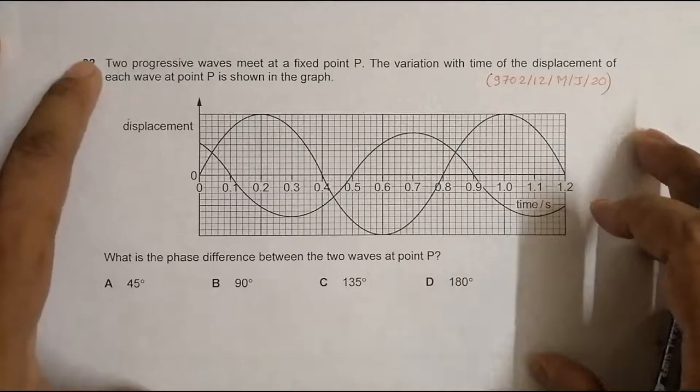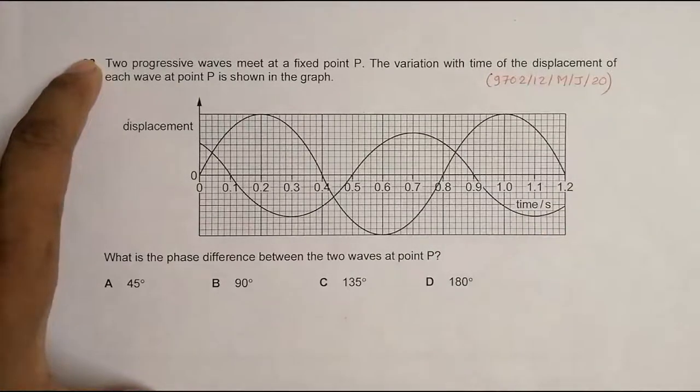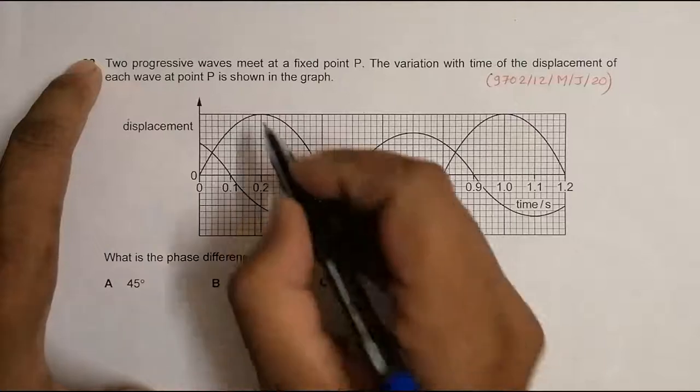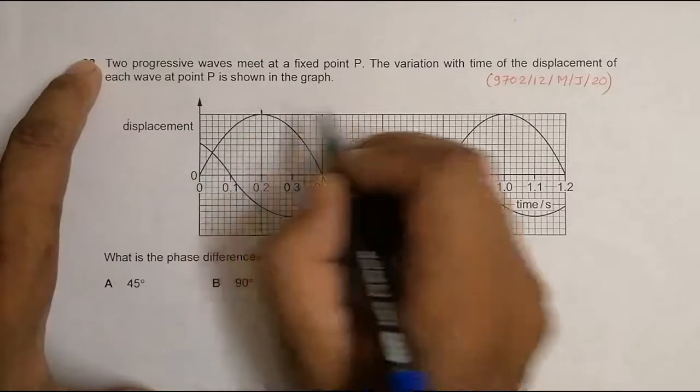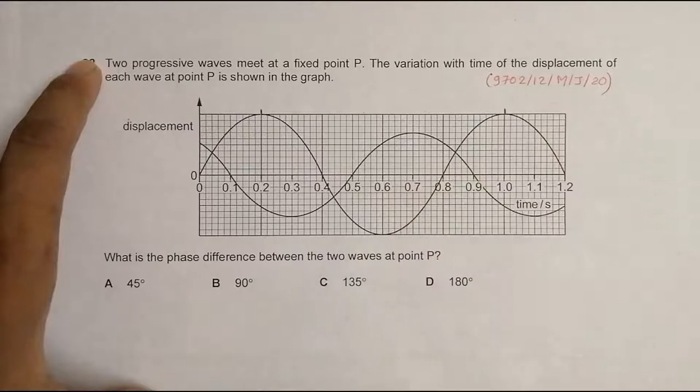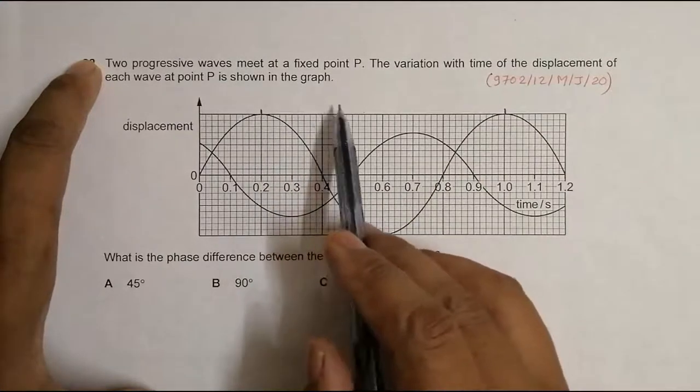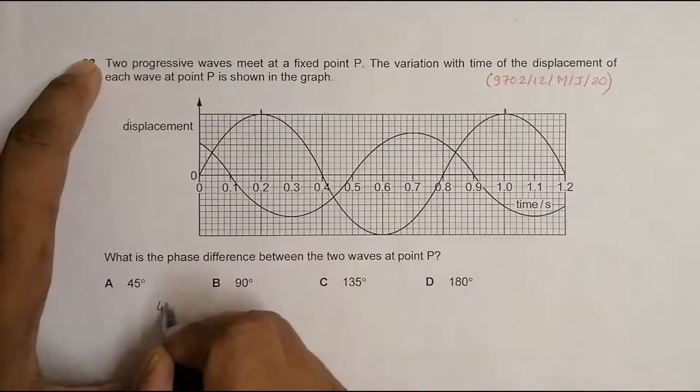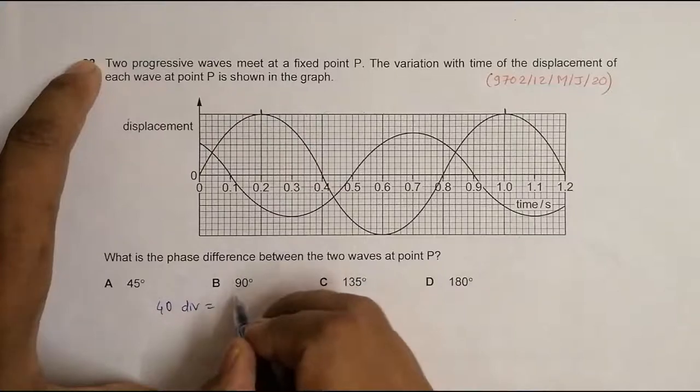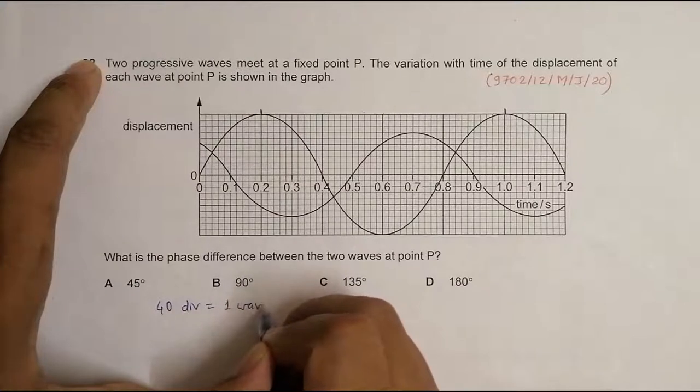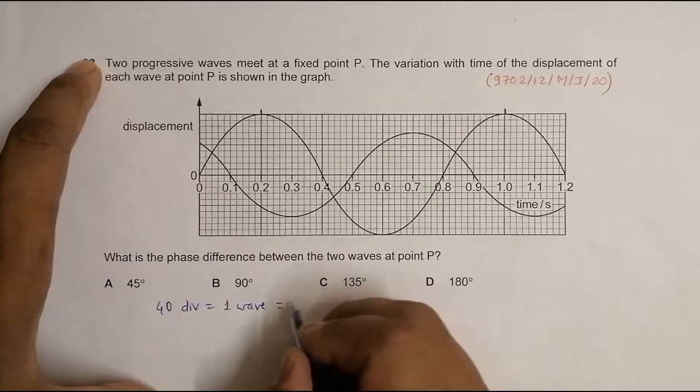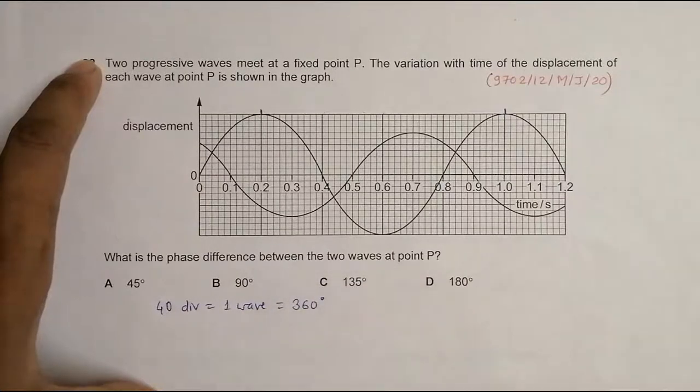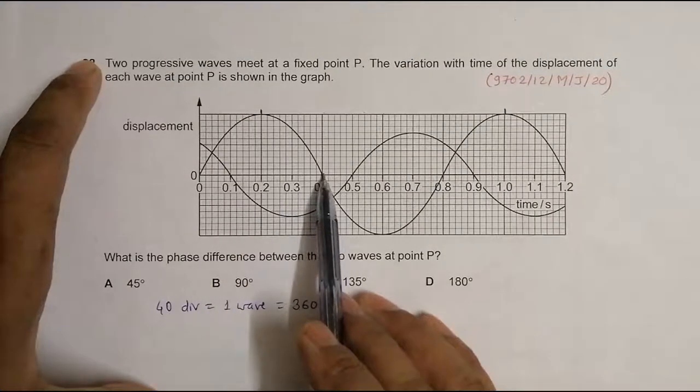So for that, what we need to do is, from this crest to this crest of the same wave, the number of divisions is 10, 20, 30, 40. So 40 divisions is equal to one wave, which means it is equal to 360 degrees. So one wave means from crest to crest: from here to here is 90 degrees, then 180, then 270, and then 360. 40 divisions is 360 degrees.